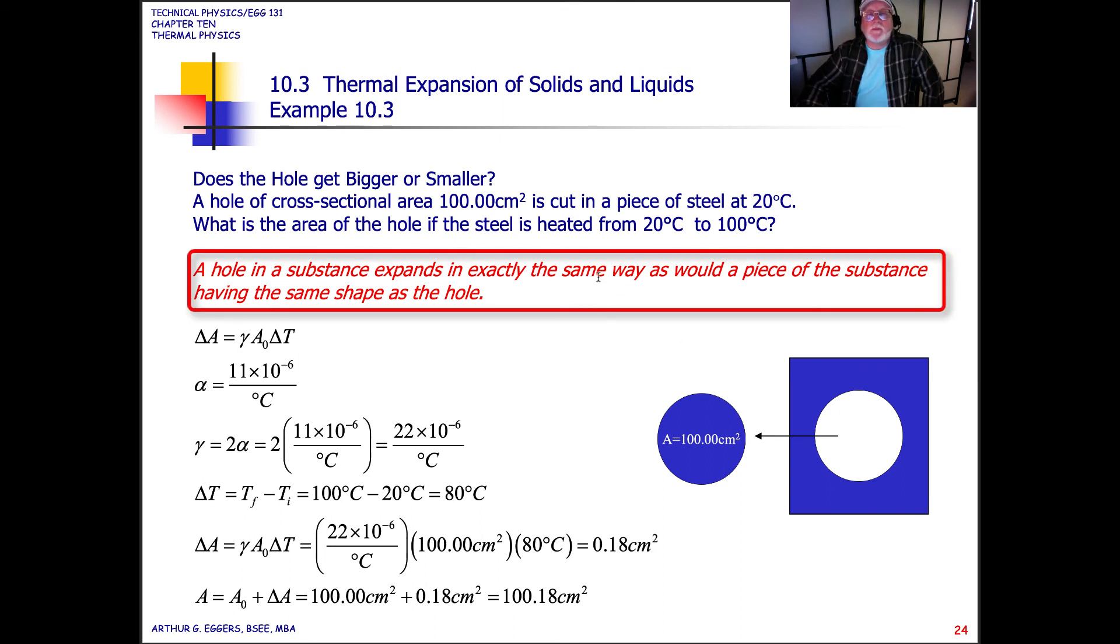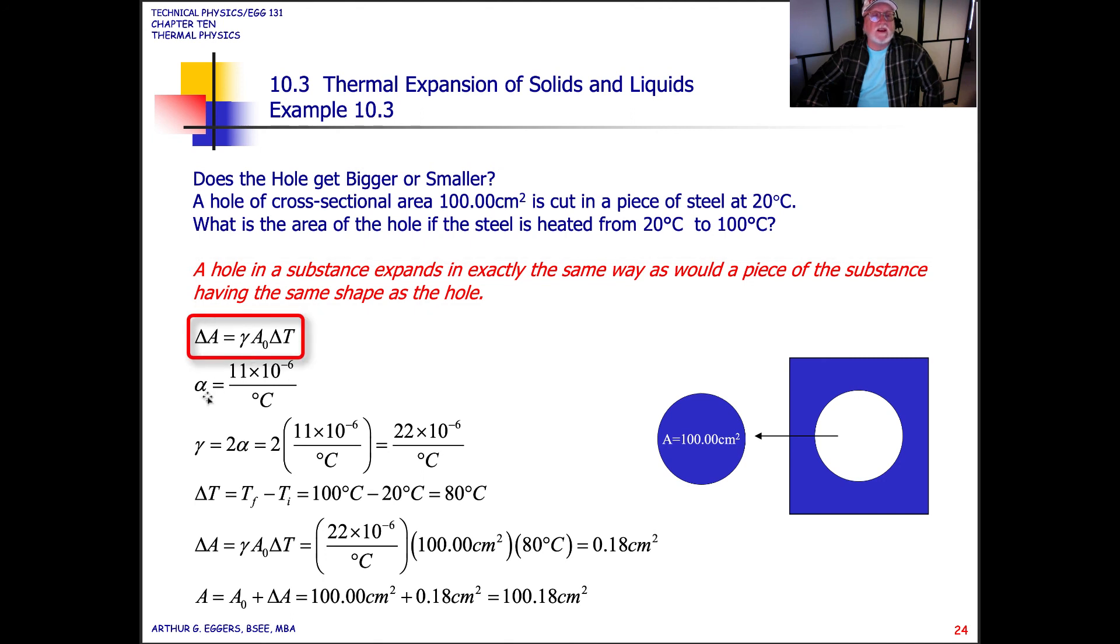This example here, you can take a quick look at it. What we're looking at is we've extracted the middle out of this square, and it has an area of 100 centimeters squared. A hole in a substance expands in exactly the same way as would a piece of the substance having the same shape. So now we're dealing with area. Delta area, the change in area, is 2 times alpha. So 2 times alpha gives us 22 times 10 to the minus 6 per degree Celsius. The change in temperature from minus 20 to 100 gives us 80 degrees Celsius. The change in area becomes 22 times 10 to the minus 6 times 100 meters squared times 80 degrees Celsius, or 0.18 square centimeters. So the area becomes 100 centimeters squared plus 0.18 centimeters squared, or 100.18 centimeters squared.